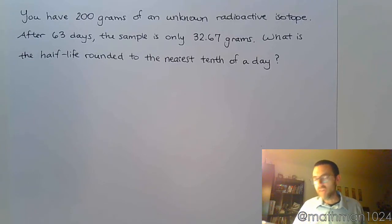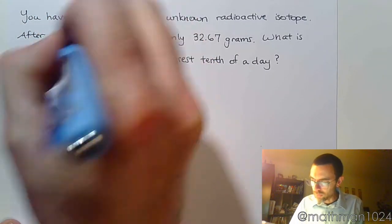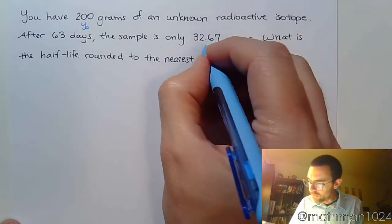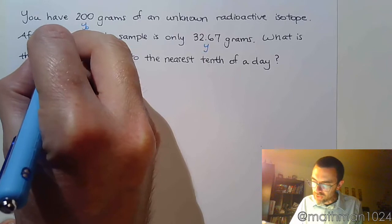What is the half-life rounded to the nearest tenth of a day? Well, let's think about what we have and what we don't have. We don't have a rate, so we don't have a K, and we don't have the half-life time. But we do have a very particular time, right? We're given an initial value Y₀, we're given a final value Y, and we're given a very specific value for T.